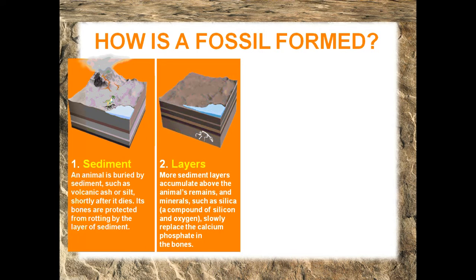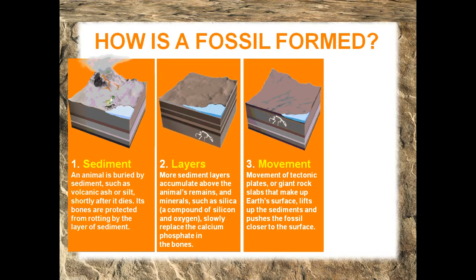Sediment layers accumulate above the animal remains and minerals, such as silica — a compound of silicon and oxygen — slowly replace the calcium phosphate that is found in bones. Then, movement of tectonic plates, or giant rock slabs that make up earth's surface, lifts up the sediments and pushes the fossil closer to the earth's surface.